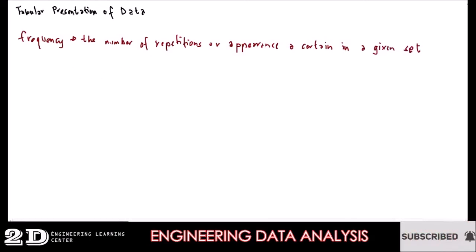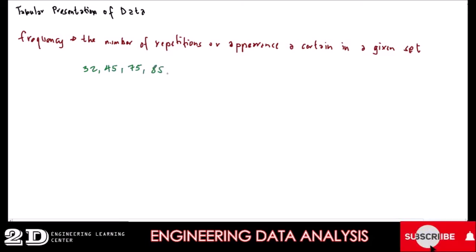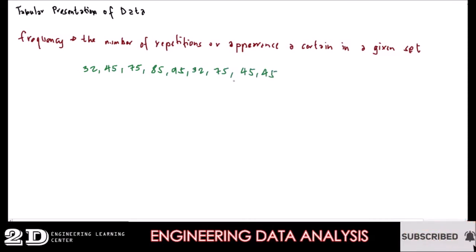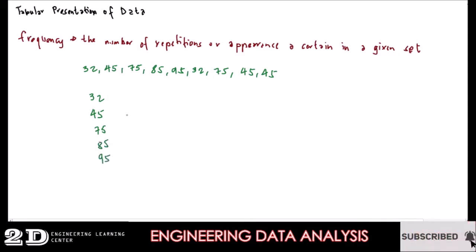For example, we have a set of data: 32, 45, 75, 85, 95, 32, 75, 45, 45. So if we were going to find the frequency of each data, we first write the data: 32, 45, 75, 85, 95. We also have two 32s, then 75, then 45 and 45.